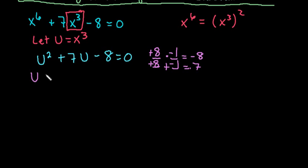So I'm going to rewrite this as u plus 8 times u minus 1, I was trying to skip steps, equals 0. So we can say that u plus 8 equals 0 or u equals negative 8 or u equals positive 1. So we have to remember that u is not what we are looking for.